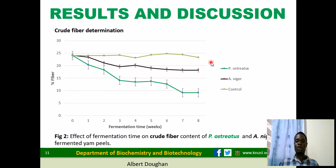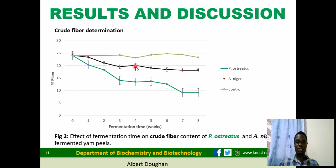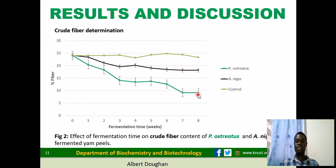Crude fiber content indicates the amount of fiber degraded by the enzymes produced by the microorganisms. For the control there was a gentle decline, and for Aspergillus niger there was a slight decrease in fiber content but it was not significant. The most notable result was for Pleurotus ostreatus fermentation, which gave a very significant fiber degradation, decreasing from 25 to about 9 percent by week eight. This means a very high amount of glucose is available which can be utilized by the farm animals.